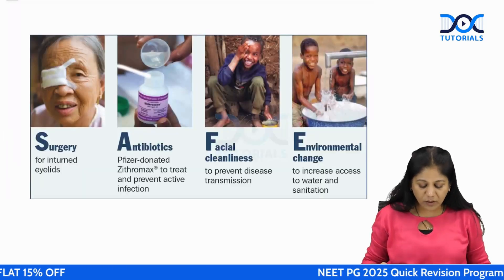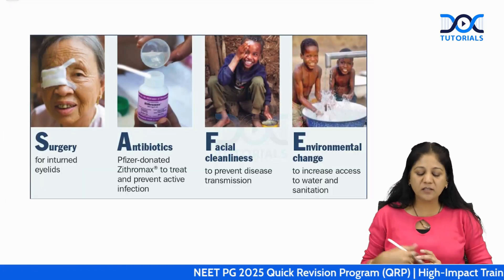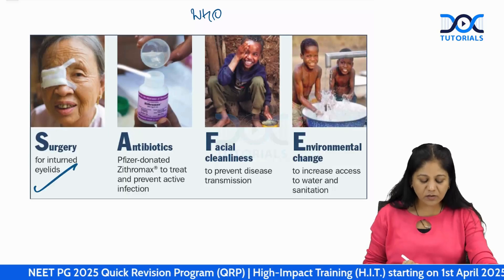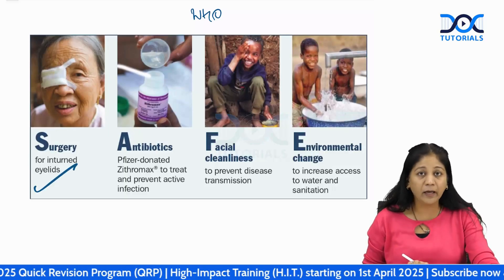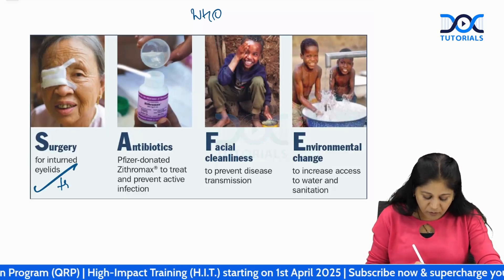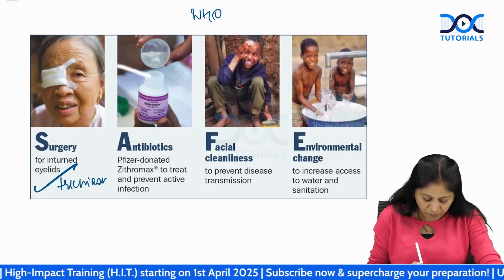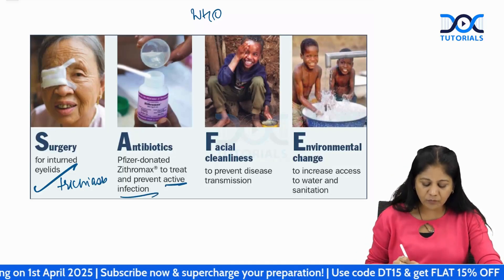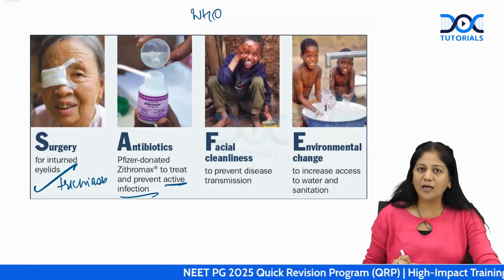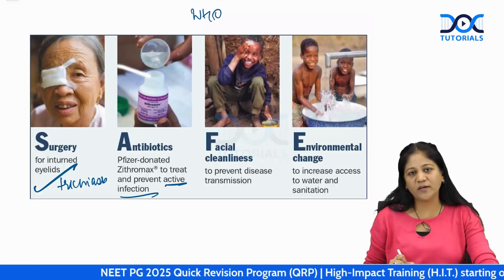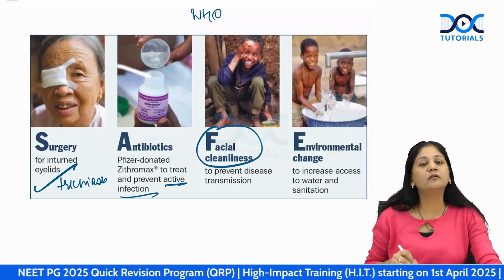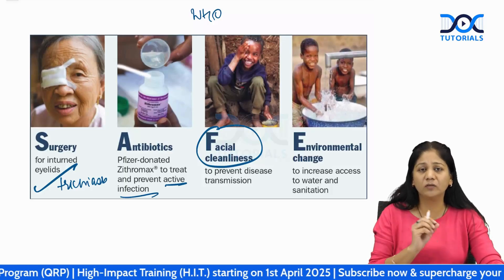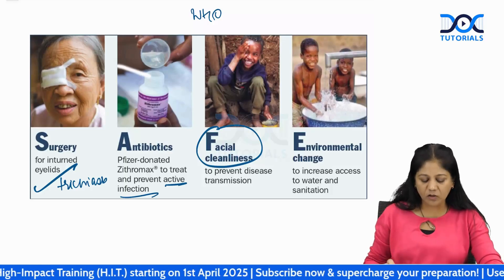The WHO SAFE strategy recommends: Surgery for inverted eyelid, entropion, or trichiasis; Antibiotics for active inflammation — azithromycin is the drug of choice; promoting Facial hygiene; and Environmental sanitation as prophylactic measures.